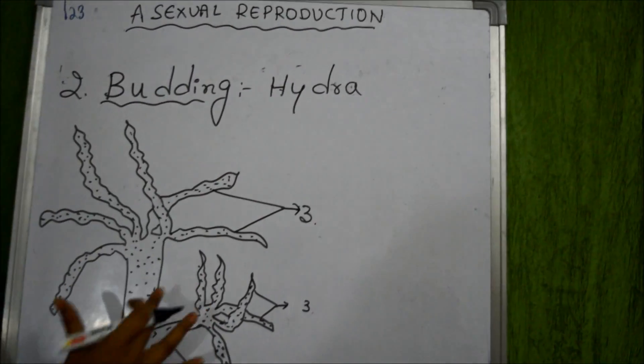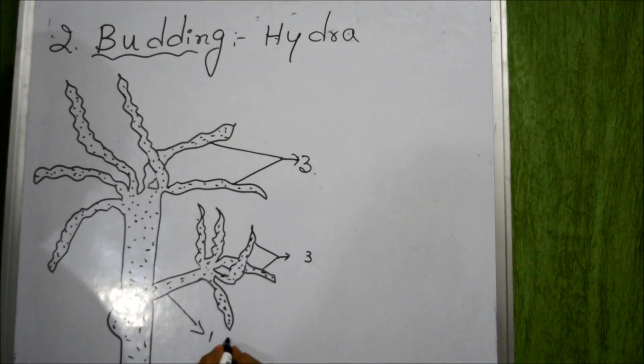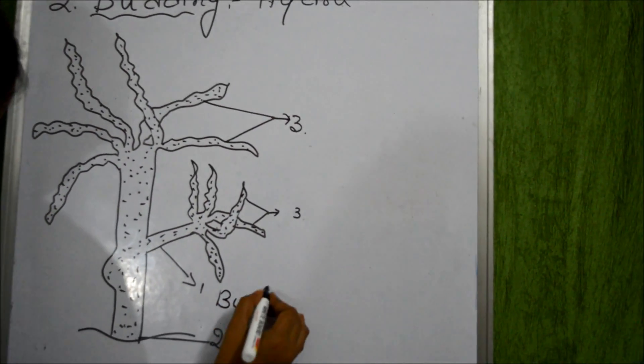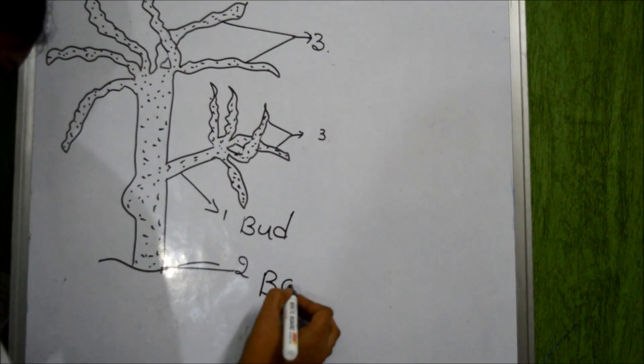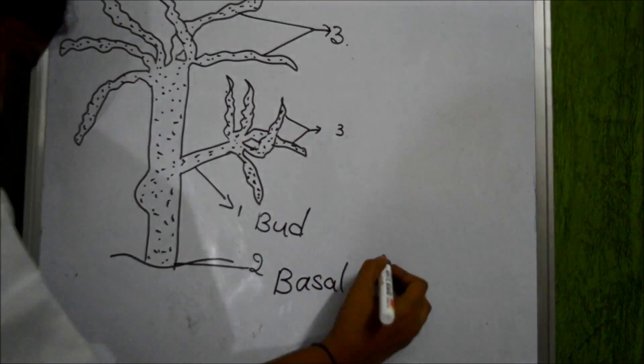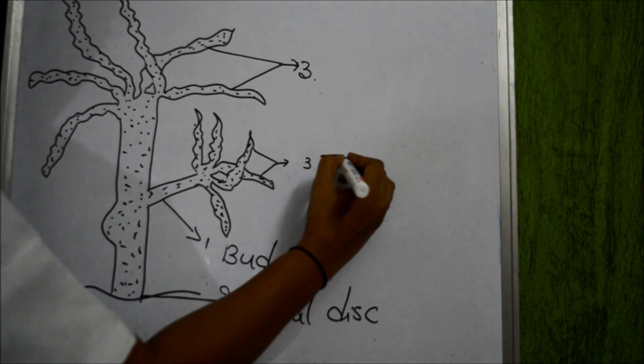This is the structure of the Hydra. Mainly it consists of three parts. First one is bud, second one is basal disc, third one is tentacles.